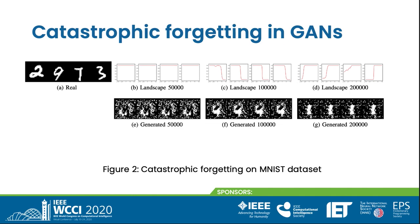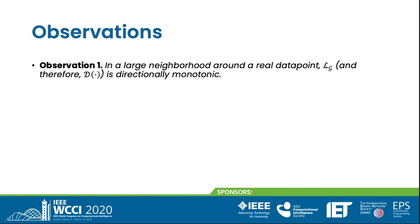The catastrophic forgetting problem exists in GANs with different architectures trained on different datasets. We make the following observation. Observation 1: In a large neighborhood around a real data point, the discriminator is directionally monotonic.